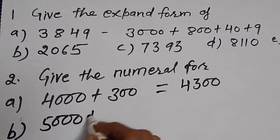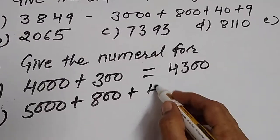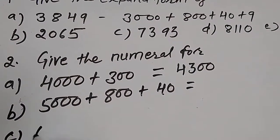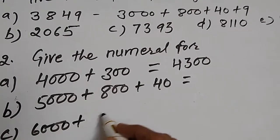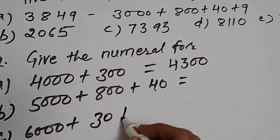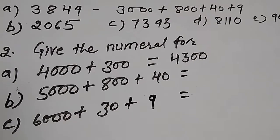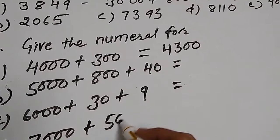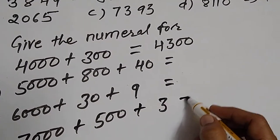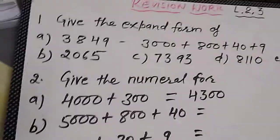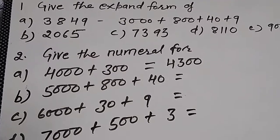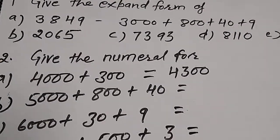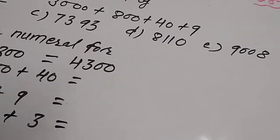5500 plus 800 plus 40. Next sum is 3000 plus 30 plus 9. 5500 plus 3. And this sum is 7000 plus 500 plus 3. These are the sums you have to write. After that next sum you will do. I'll clean this much.